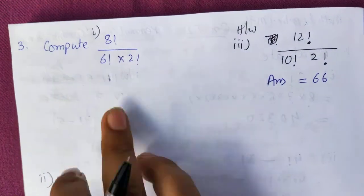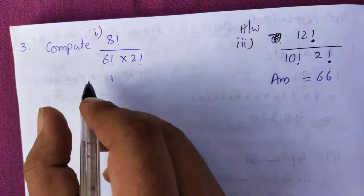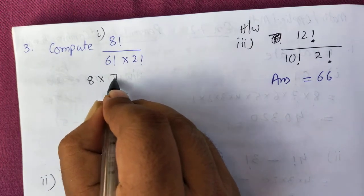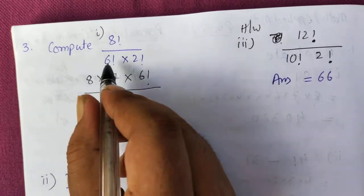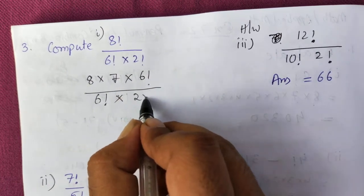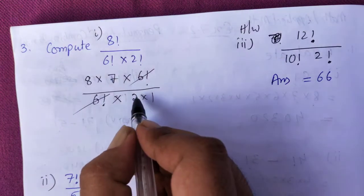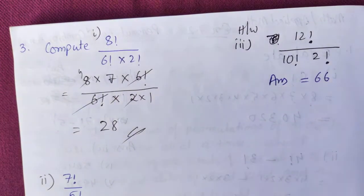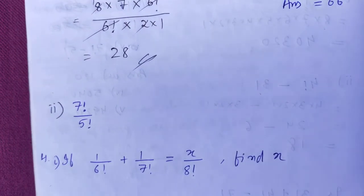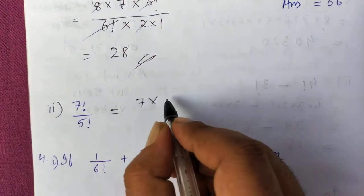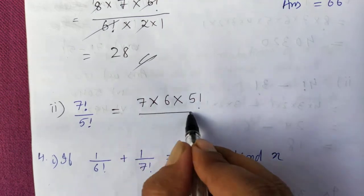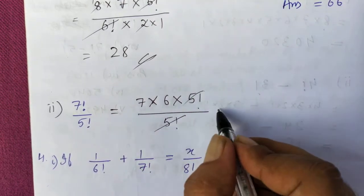Question 3: Simplify 8! ÷ (6! × 2!). Write 8! as 8 × 7 × 6!, cancel 6!, and write 2! as 2 × 1. Result: (8 × 7) ÷ 2 = 28. For the second part, 7! ÷ 5! = 7 × 6 × 5! ÷ 5! = 7 × 6 = 42.